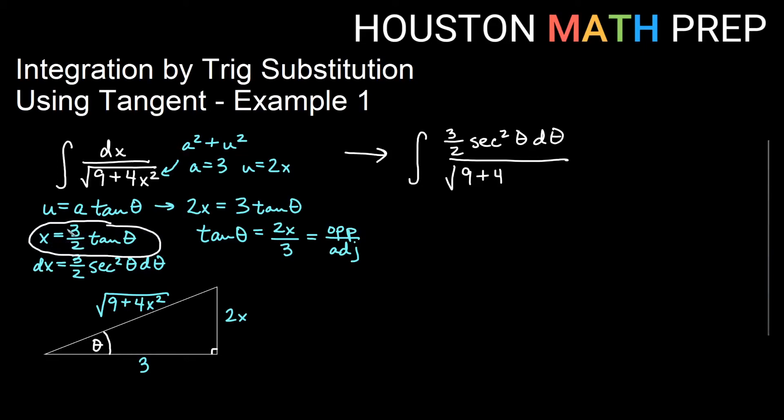If I square that, I get 9 over 4 times tan squared theta. The 9 over 4 multiplies the 4 and gives you the exact 9 you have out front. I'm just writing it in here so you can see it.